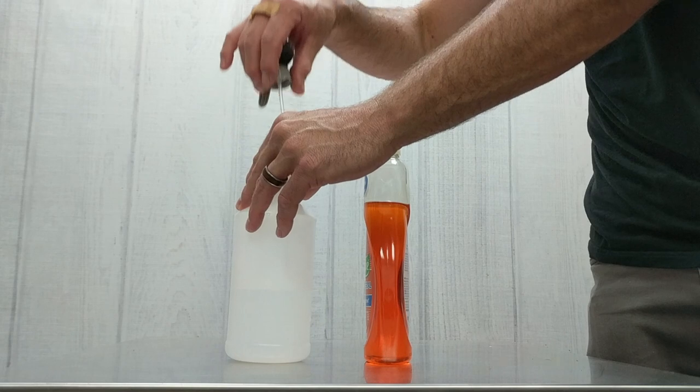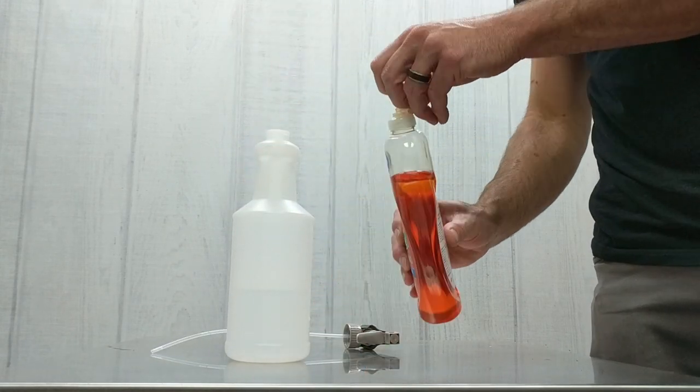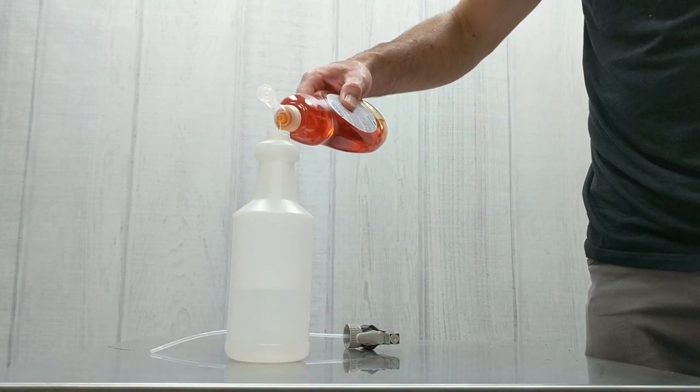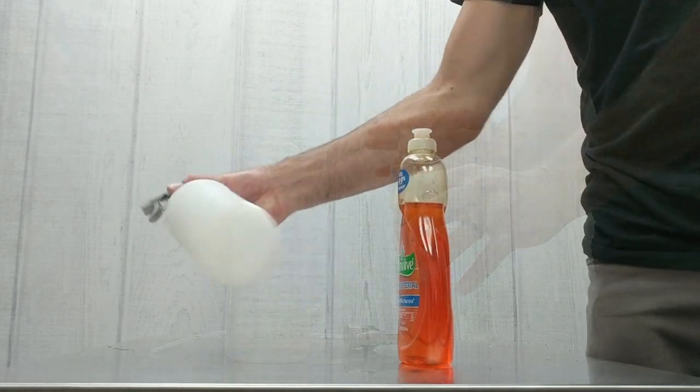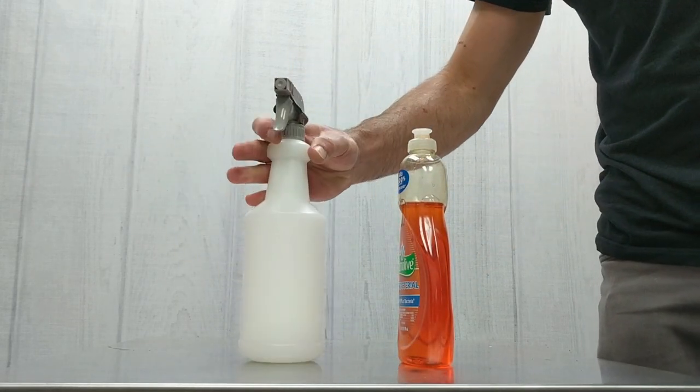Begin by getting a spray bottle with some warm water and mix in just a small amount of dish soap. Mix the bottle up thoroughly and you have your gas leak detection spray ready.